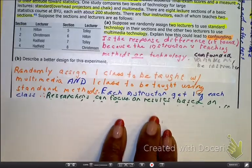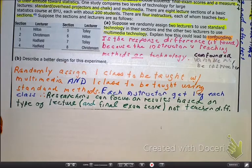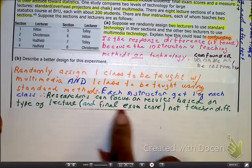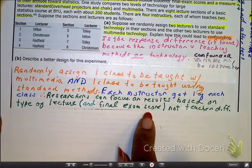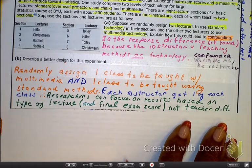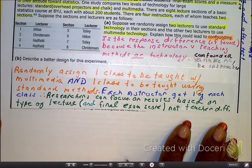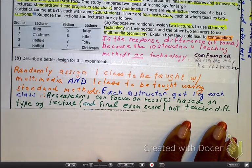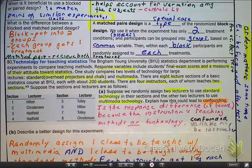Therefore the researchers can find the results based on the type of lecture, and of course the exam score, and I forgot to write down here, and the attitude towards statistics, not because of the teacher. So it's taking out the confounded variable of the teacher.